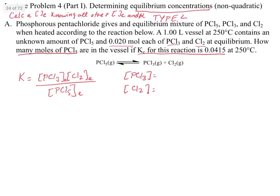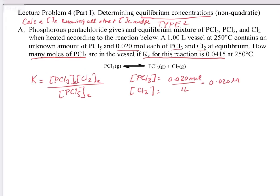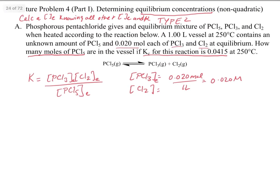We can get those concentrations by taking the number of moles — both are going to be equivalent to each other. It's 0.020 moles divided by 1 liter, which gives us 0.020 molar. So now we know our equilibrium concentrations. If we're given equilibrium concentrations, we can plug those in and solve the equation.